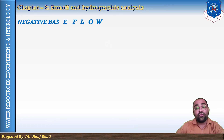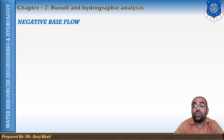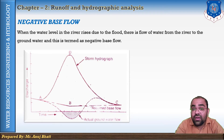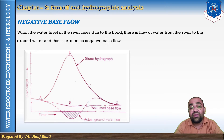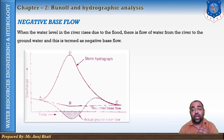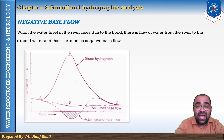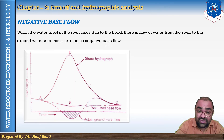The third method is the negative base flow method. When the water level in the river is low before the occurrence of flood, there is a flow from groundwater to the river. But when the water level rises due to the flood, there is a flow of water from the river to the groundwater — this is termed negative base flow. As the flood level rises further, the groundwater again starts contributing to the river. The variation in base flow is shown in the figure with a dotted line, where the shaded portion represents the negative base flow.